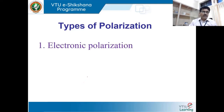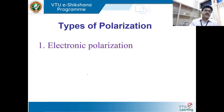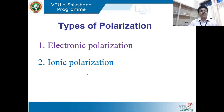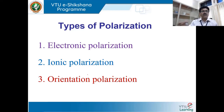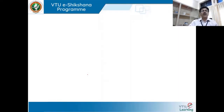There are three dominant types of polarization mechanisms. The first is electronic polarization, the second is ionic polarization, and the third is orientational polarization. There are other polarization mechanisms, but these three are the dominant ones.